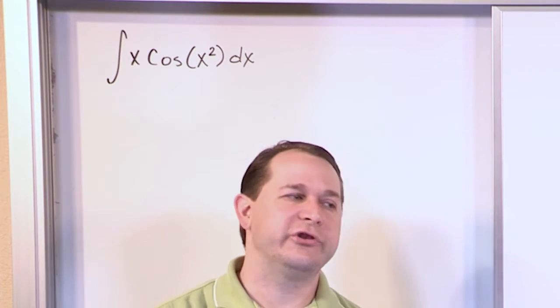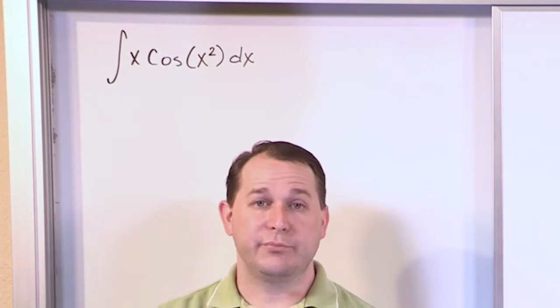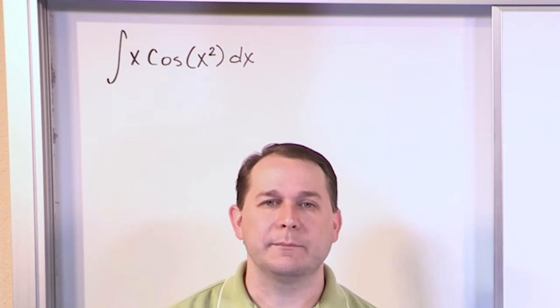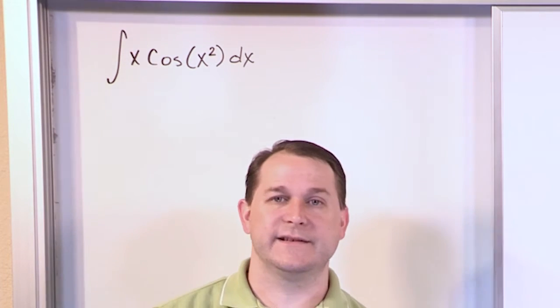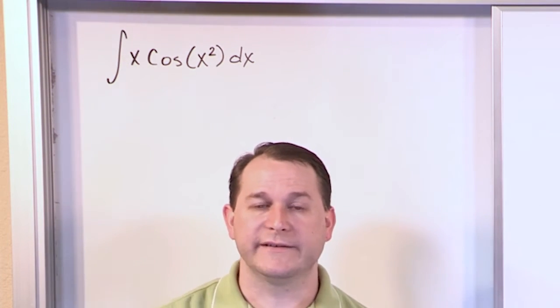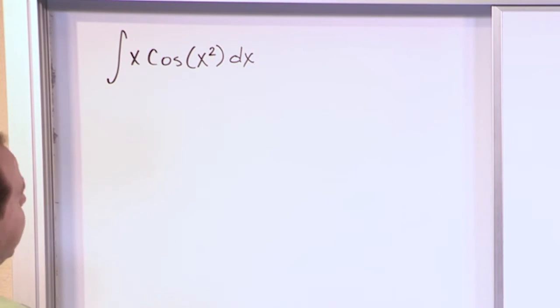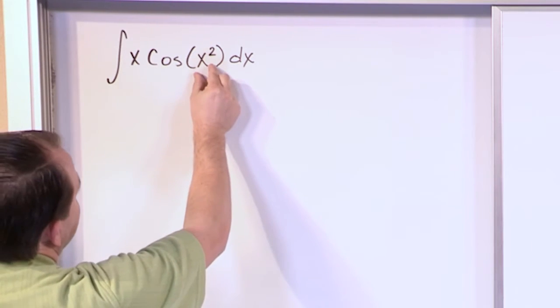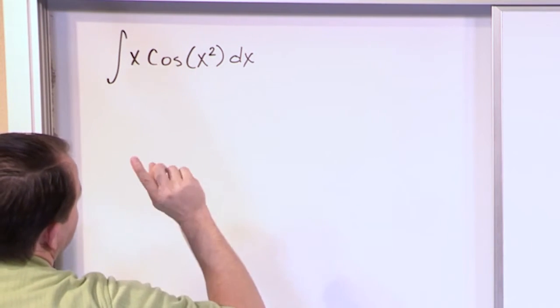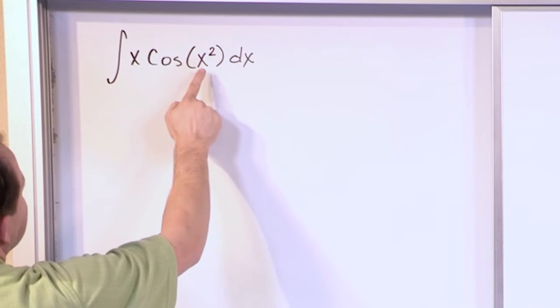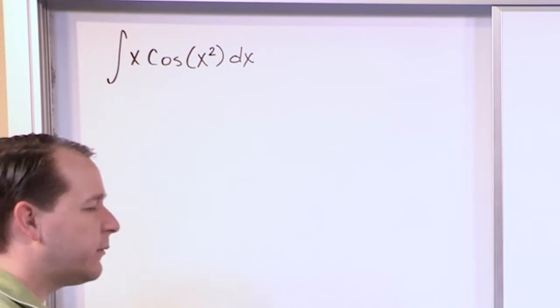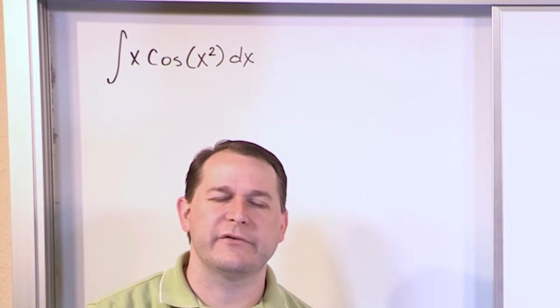What we have here is an x out front, a cosine which we kind of know how to integrate but it's in a weird form, and inside we have x squared. I think if you recall when I introduced substitution, I told you that a lot of times when you simplify your integral and put it in terms of u, you should get some kind of cancellation that makes it simple. We're going to see that in this problem.